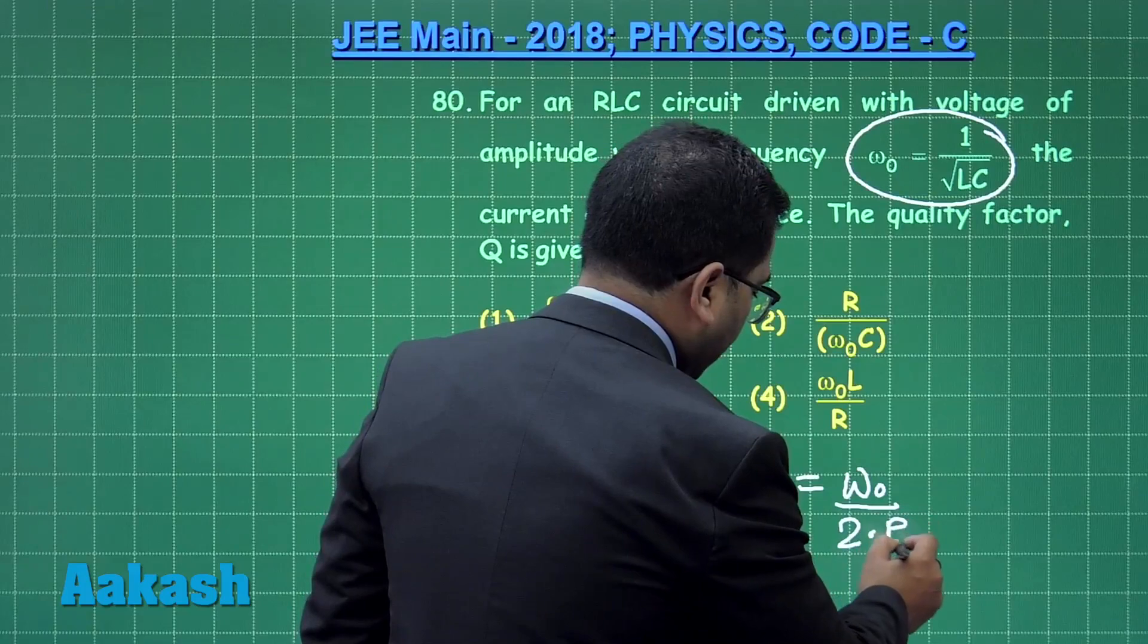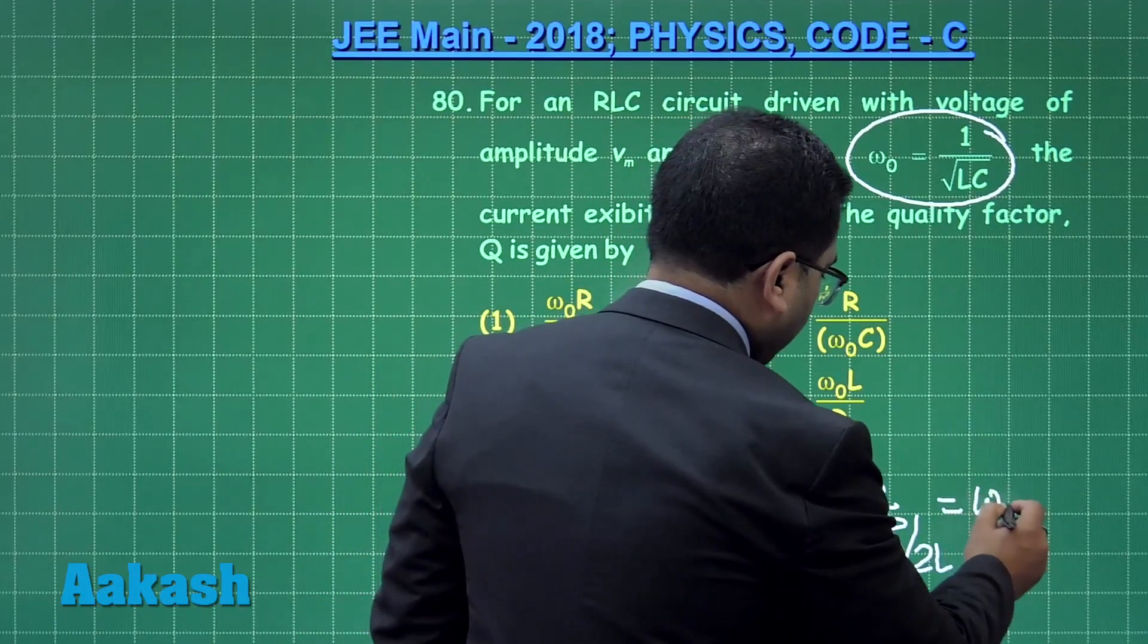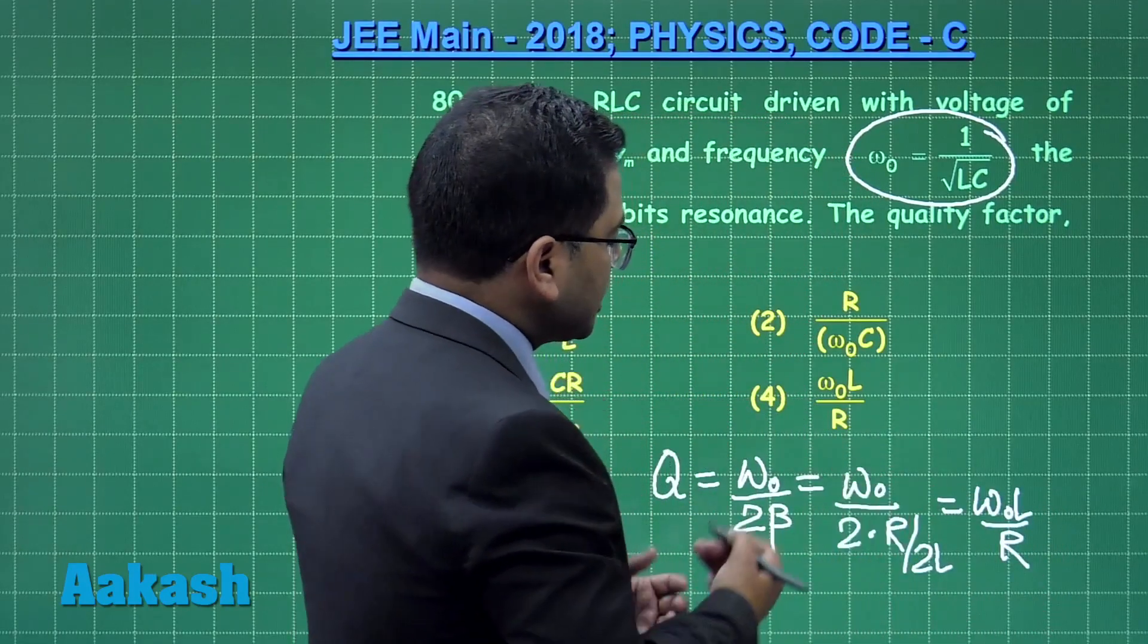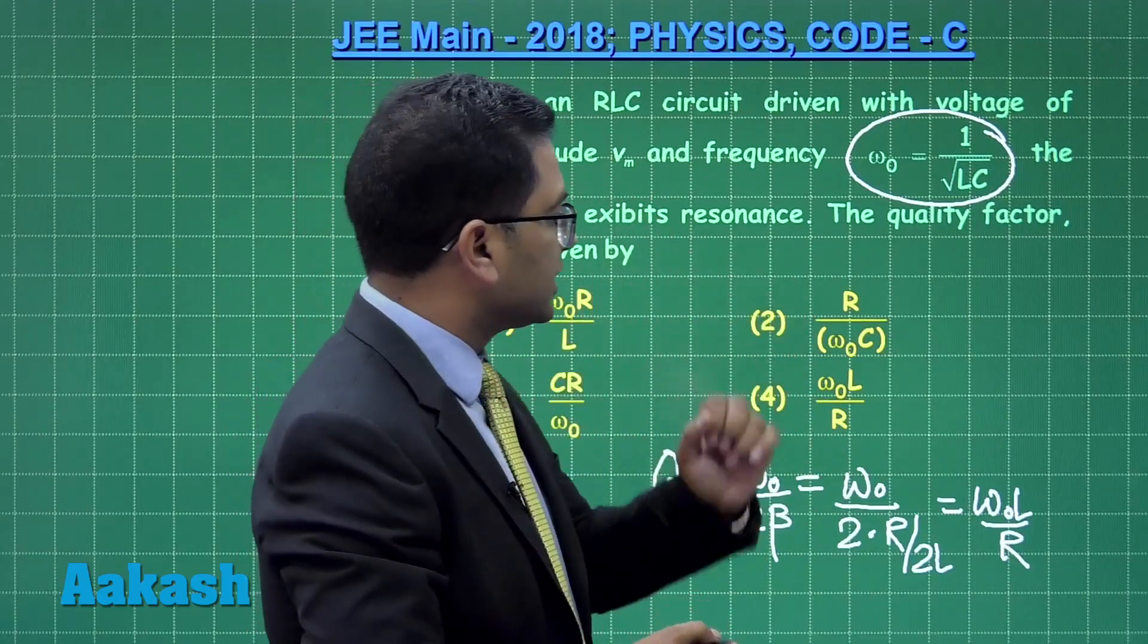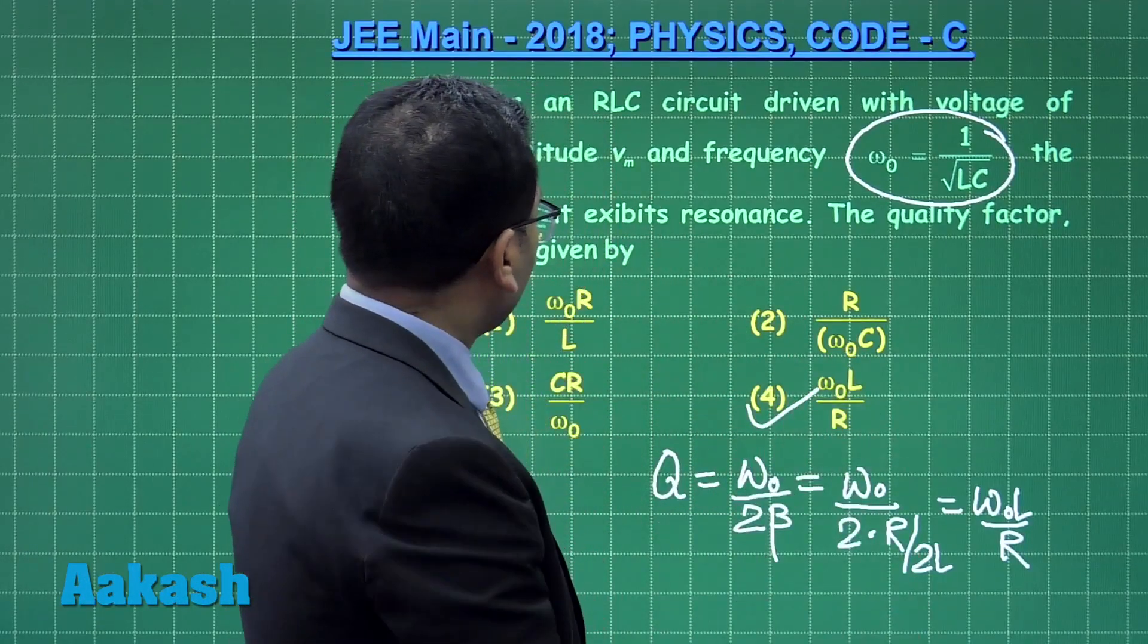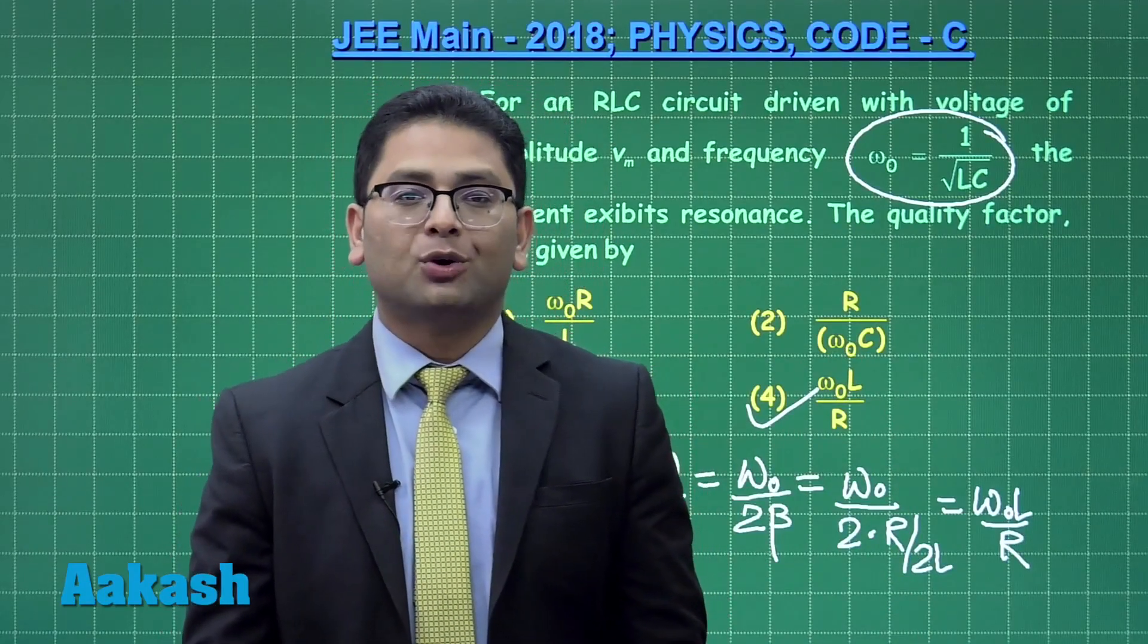The damping factor comes out to be R upon 2L, so this becomes omega 0 L by R. There is no additional calculation needed since the question simply demands the definition of quality factor. Option 4 is the correct answer for question 80.